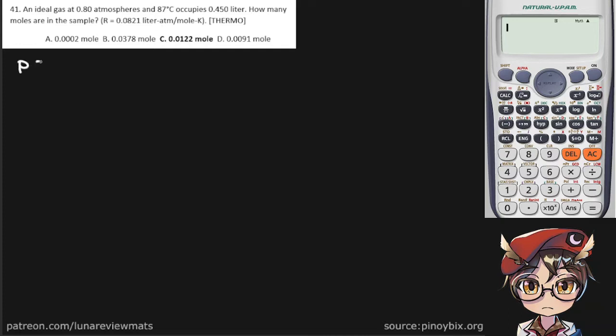So we're given a pressure of 0.80 atm. Temperature is 87°C. We convert that to Kelvin by adding 273. The volume it occupies is 0.45 liters and we're trying to find the number of moles.